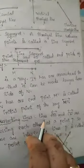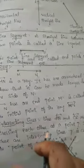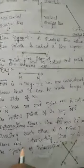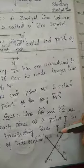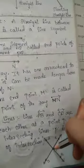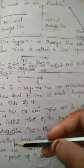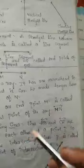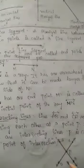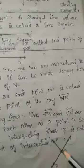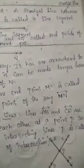Next is intersecting lines. Lines AB and CD are crossing each other at a point P, so these are called intersecting lines. P is called the point of intersection.